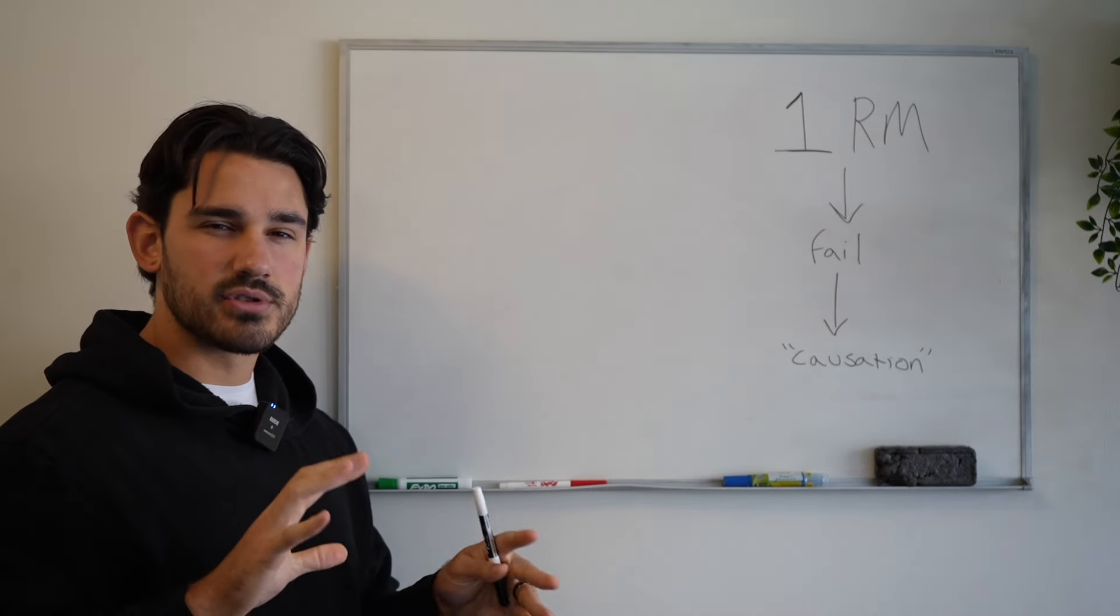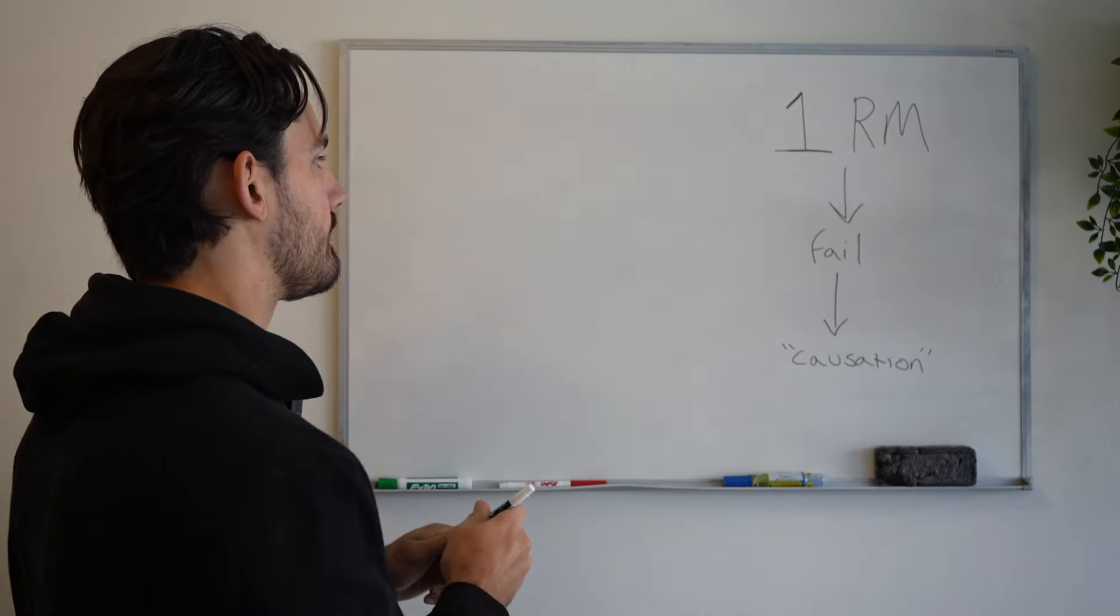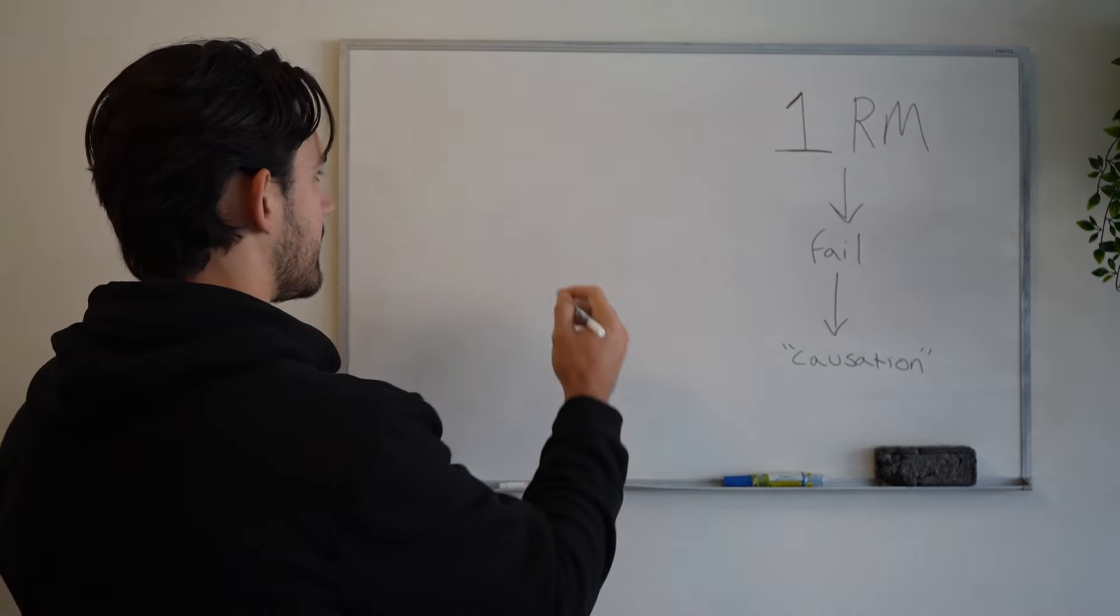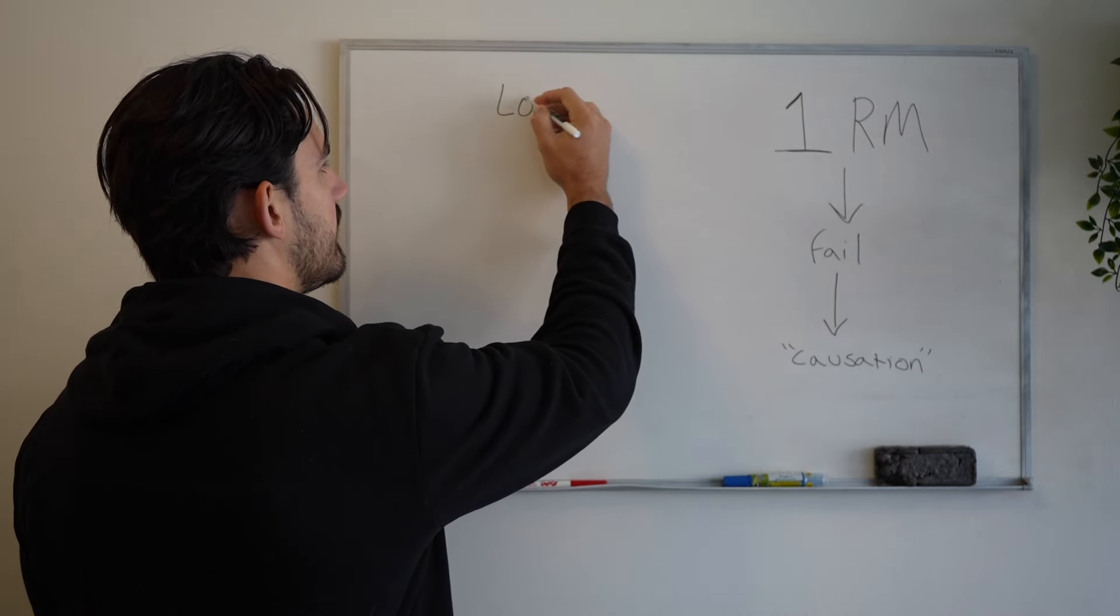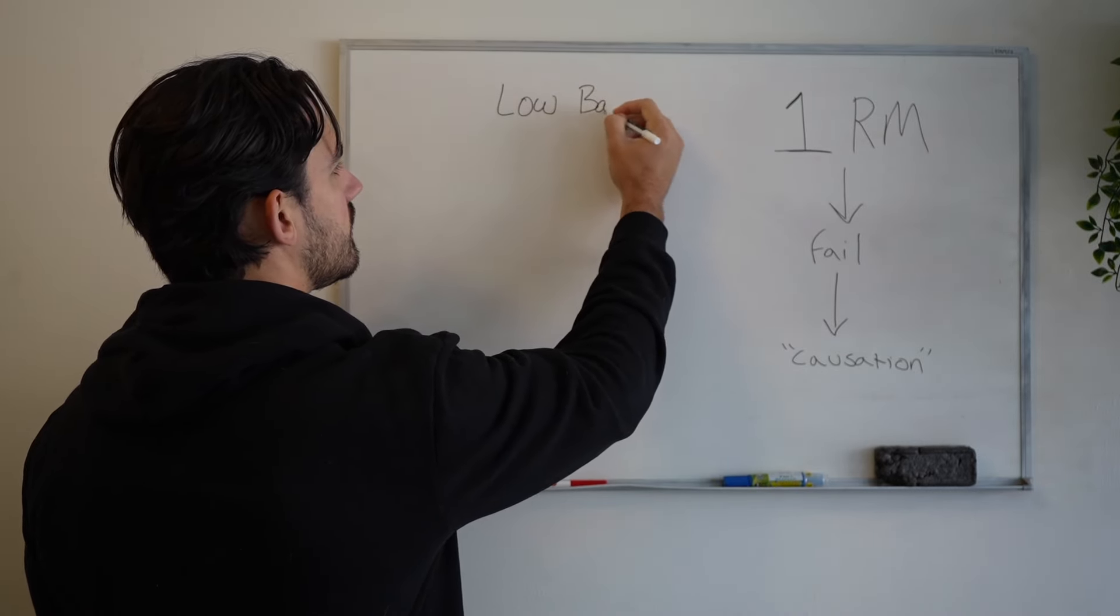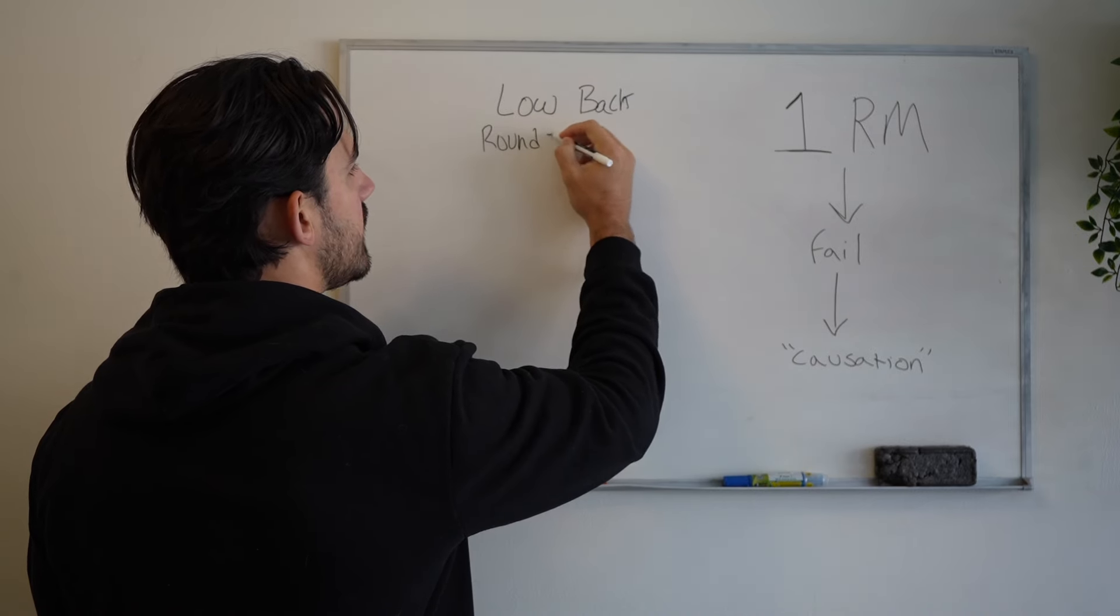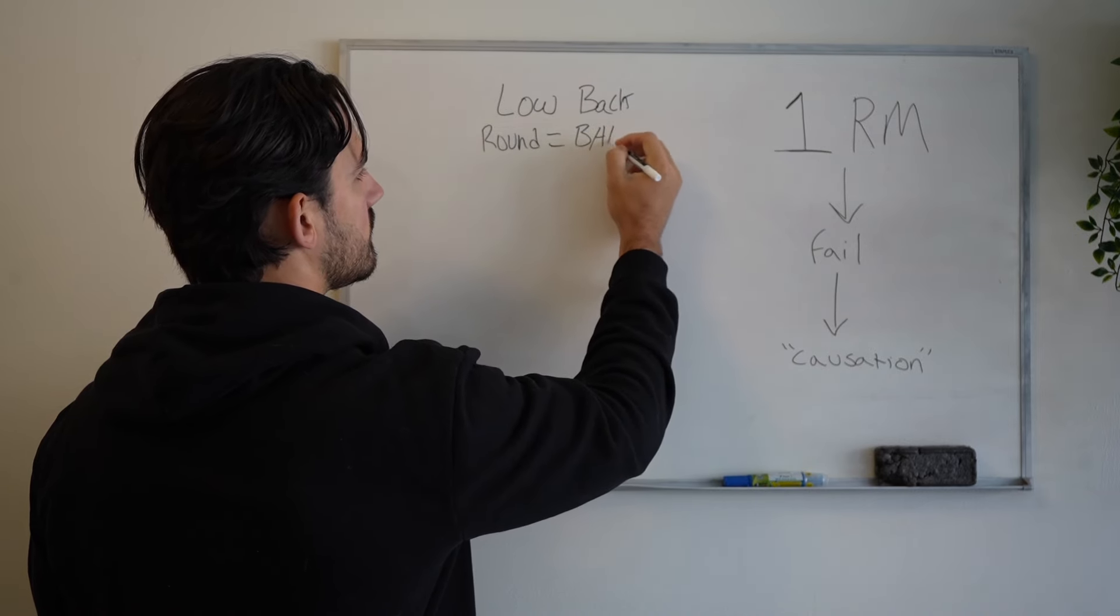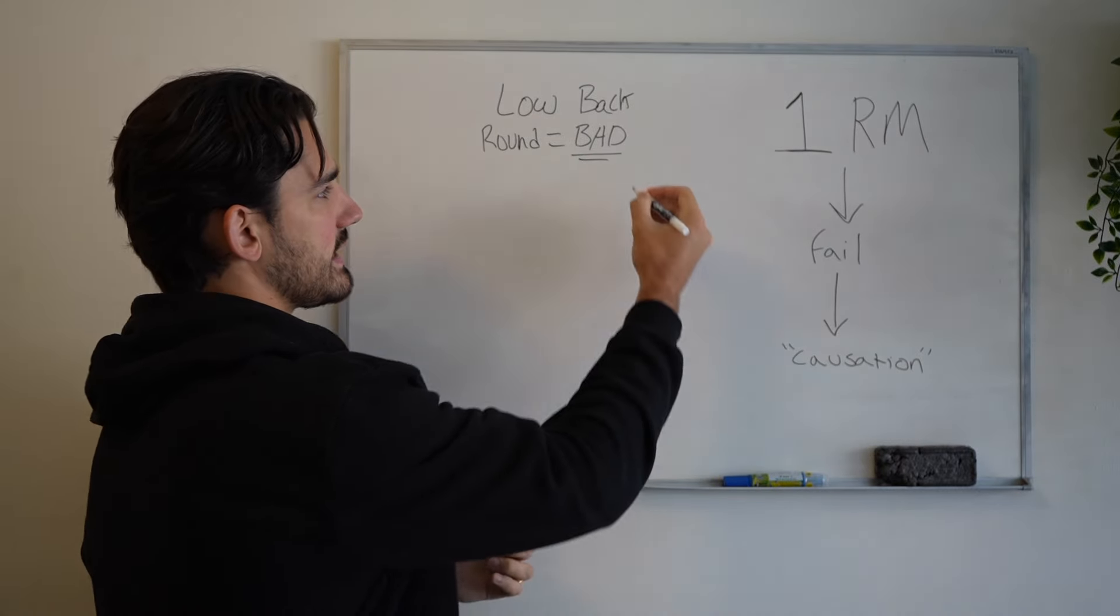So let me try to sort of visualize this with a little diagram here, my expert drawing skills. So it all starts with the opinion that low back round equals bad. All right, that's the starting belief. So what does that lead to?